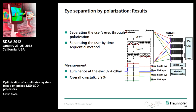Another optimization is to increase only the brightness by doubling the open time of the shutters and separating each user's eye with polarization, while user separation is done by time multiplexing. This increases luminance to 37.4 candela per square meter, but overall crosstalk increases somewhat — however, under 4% is still acceptable for a system like this.